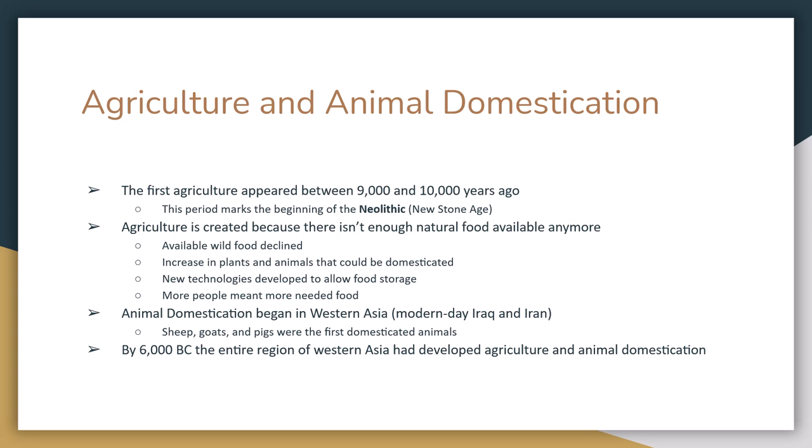As far as agriculture goes, it is a fairly new invention — only about 10,000 years ago. When agriculture begins, that is known as the Neolithic, or New Stone Age. The reasons agriculture begins: first, there simply wasn't enough food to go around anymore — the more people there are, the more food is needed. Humans had hunted and gathered much of the wild food. There was also an increase in knowledge and the ability to domesticate existing plants and animals. Finally, new technologies allowed Homo sapiens to keep, store, and transport food, making agriculture easier.